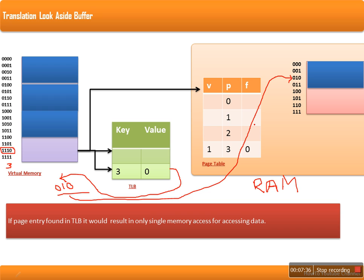In case of a TLB miss, there will be two memory accesses. So in order to reduce the delay caused by two memory accesses, translation look-aside buffers are used. Translation look-aside buffers are cache memory that store recently accessed page entries. This cache memory is limited and can store only a limited number of page entries. In the next lecture, I will explain page replacement algorithms in memory management.